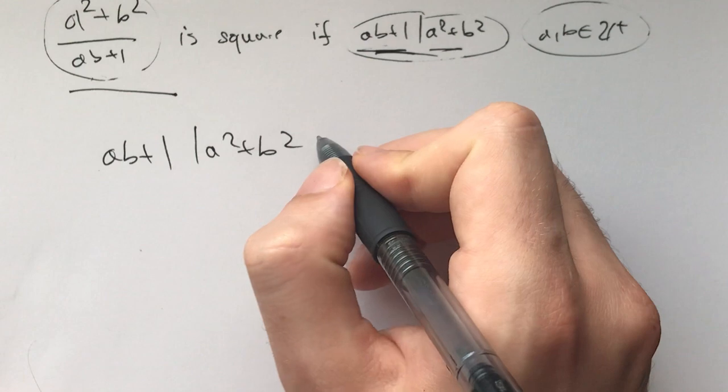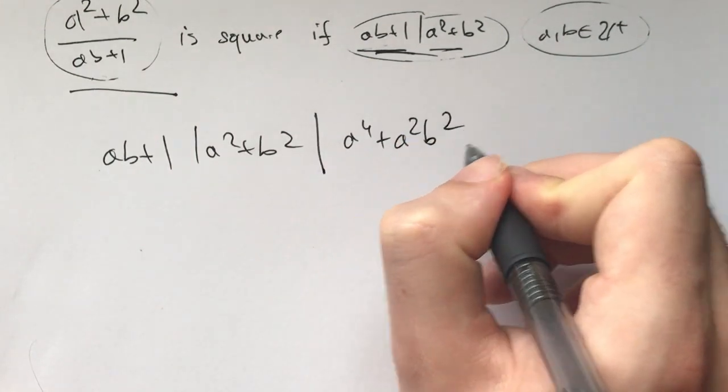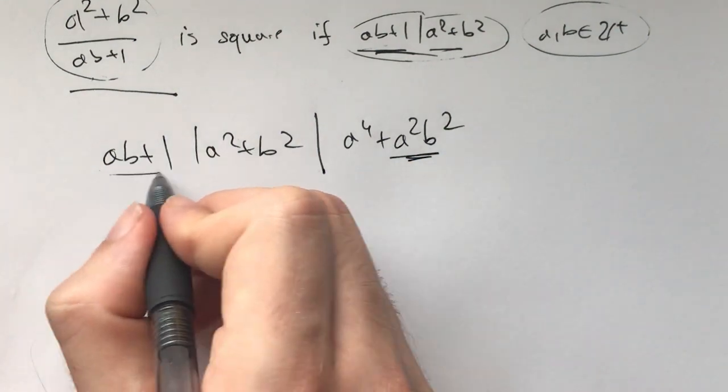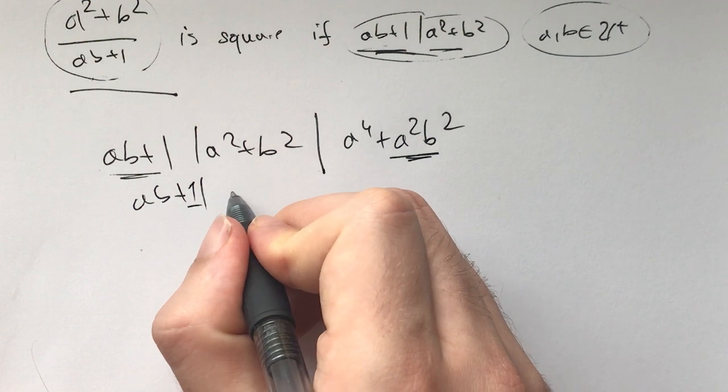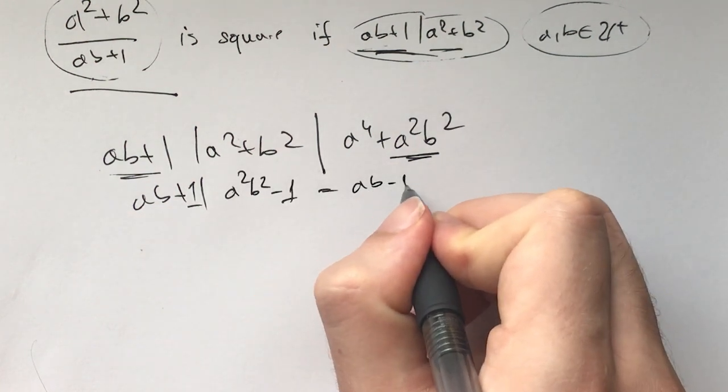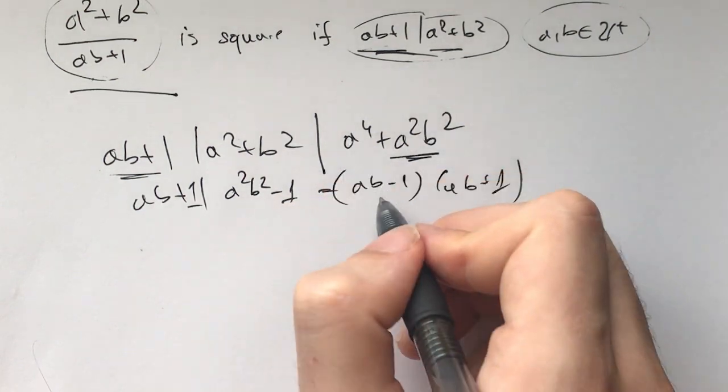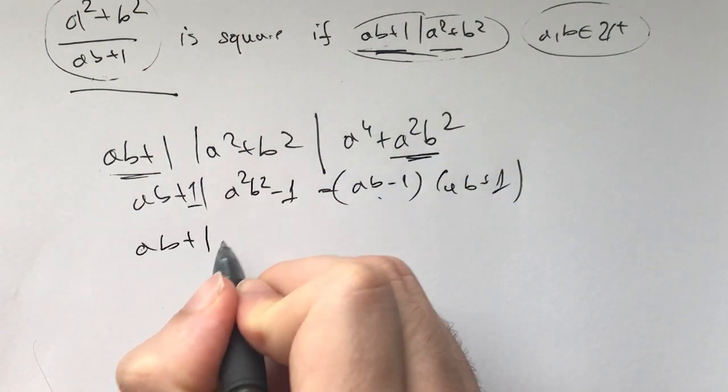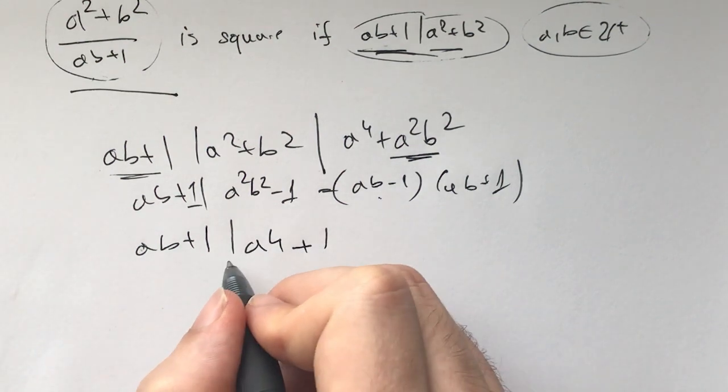For me, the first idea I had when trying to solve this is this divides a⁴+a²b². And the reason I make this is so that I can get rid of b entirely. So, this plus 1 divides a²b²-1, because this is ab-1 times ab+1. And now, when you subtract this from this, you get ab+1 divides a⁴+1.